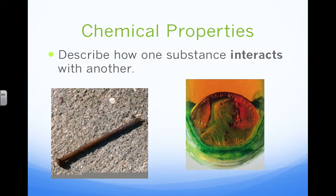Chemical properties describe how one substance interacts with another — how substances interact with water, how they interact with oxygen, how they interact with other pure substances. We're going to discuss signs and indicators that can indicate a chemical change is occurring based on the chemical properties we see. I have two pictures on the screen: one is a nail rusting, and the other is a penny changing color. What are their chemical properties, and how is the nail interacting with the air and oxygen, and how is the penny interacting with the solution it's in?